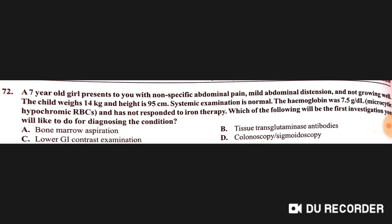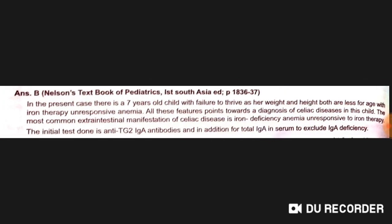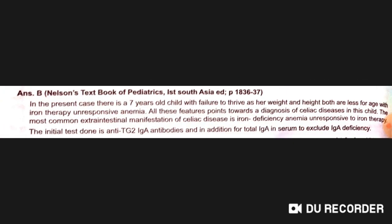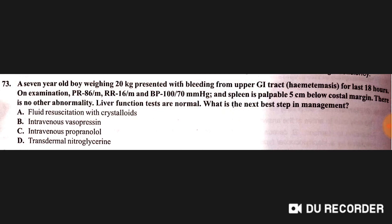A seven-year-old girl presents with non-specific abdominal pain, mild abdominal distension, and poor growth. Weight 14 kg, height 95 cm, hemoglobin 7.5 with microcytic hypochromic anemia not responding to iron therapy. The first investigation to diagnose the condition is tissue transglutaminase (TTG) antibodies, representing celiac disease.